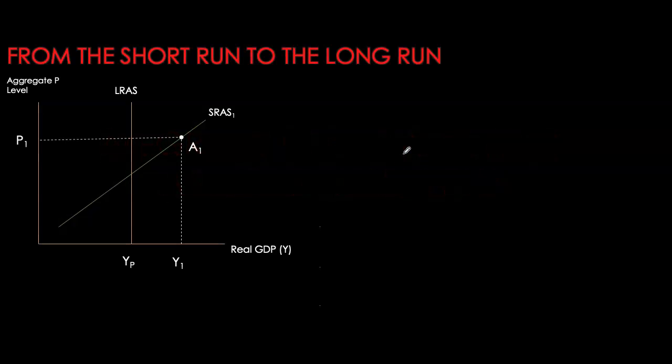Before we bring the three curves together, we first have to understand the relationship between our short-run aggregate supply and our long-run aggregate supply. So let's look at this diagram in which I have both these curves. I have real GDP on the x-axis and my aggregate price level on the y-axis, and I have my two supply curves.